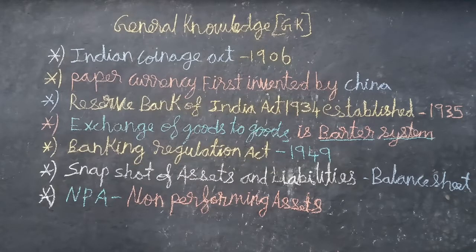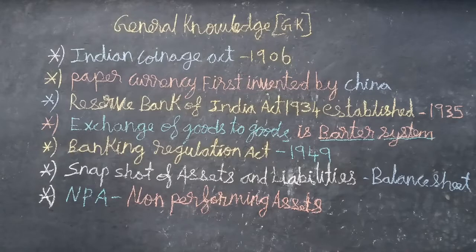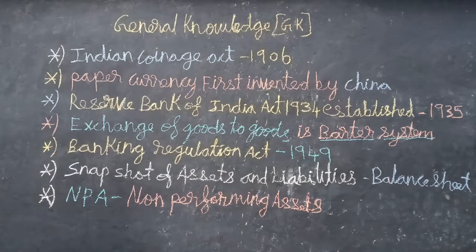Banking Regulation Act 1949. A snapshot of assets and liabilities is called a balance sheet.